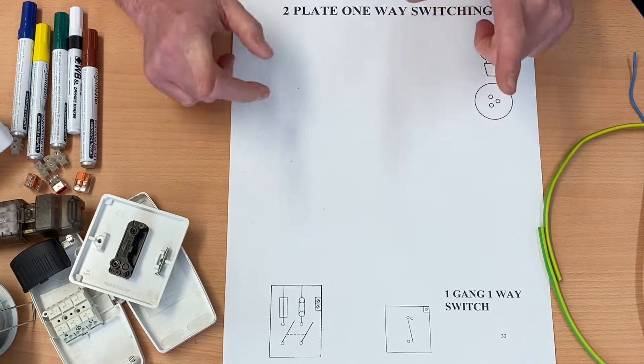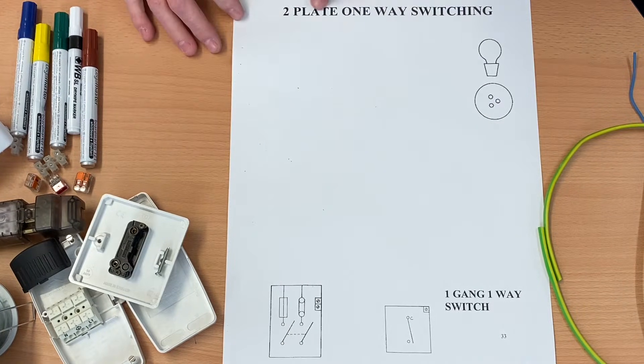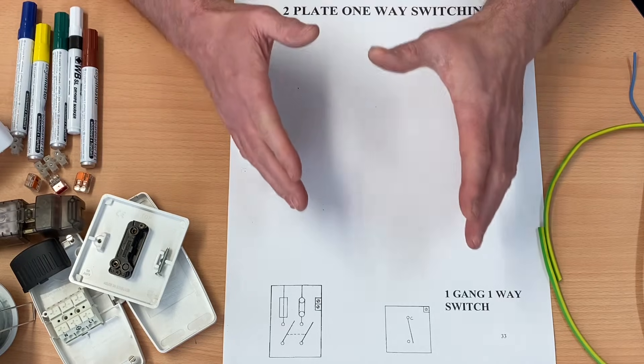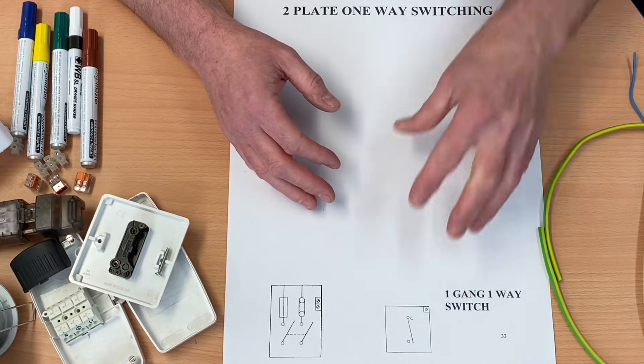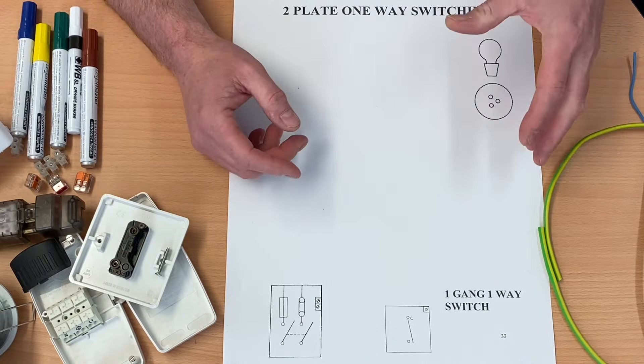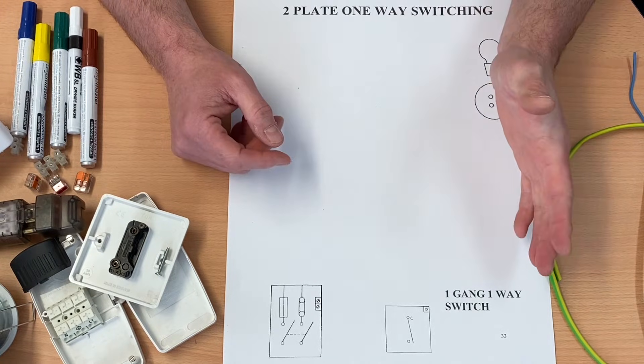So we're going to continue on some wiring diagrams, but this time we're using the two plate method. The two plate method is where you take the supply to the switch first and not to the ceiling rose, batten lamp holder, etc., like we did when we looked at the three plate method.